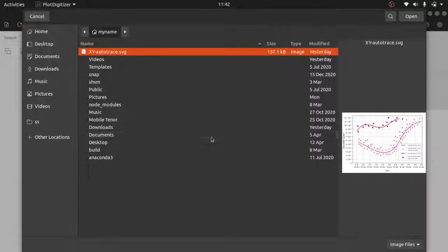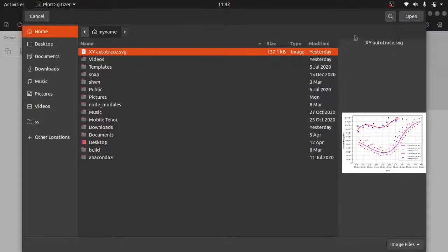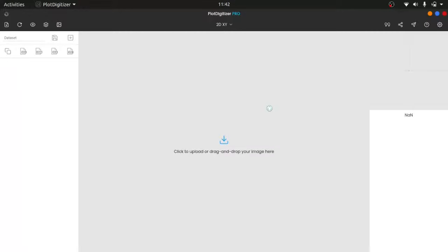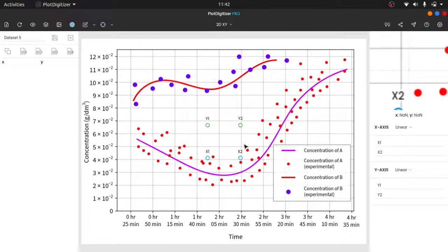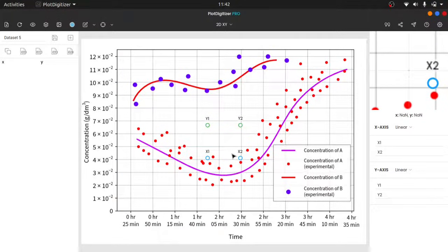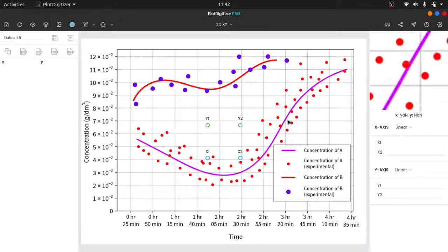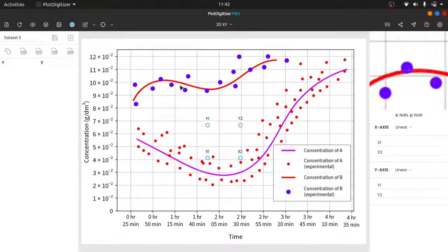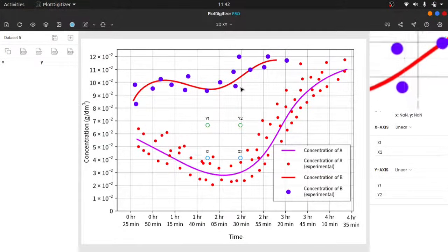Before we move forward, let's upload the graph image. As we can see, it is an XY graph. There are two curves and scattered points.